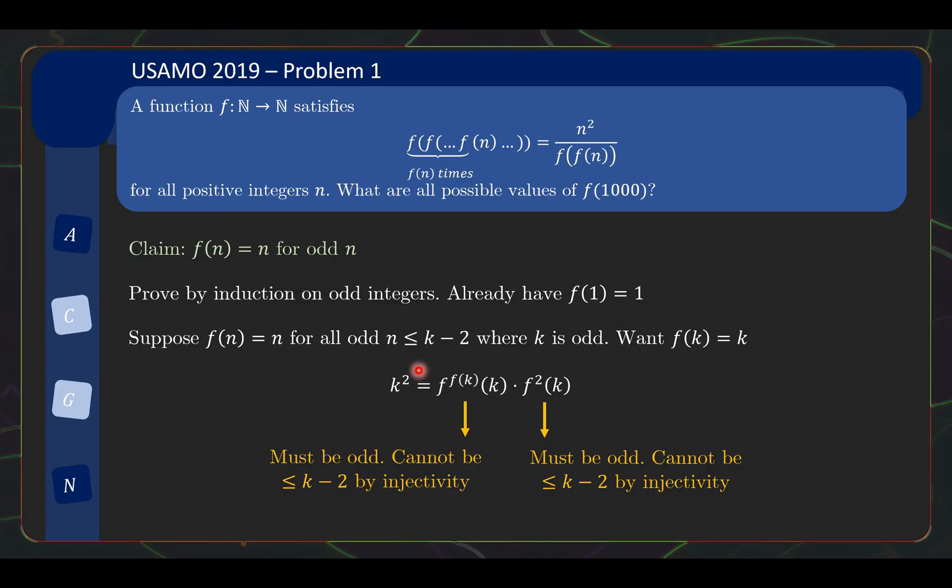k minus 2 can only be mapped in by k minus 2. So, if you start off at something that's not k minus 2, you can never end up at k minus 2. So, same thing for this factor here. So, two odd numbers that are at least k multiplied to k squared. This forces each of these factors to be equal to k. And this is the key observation. And once you reach this, in particular, f(f(k)) equals k, the rest of the proof follows a familiar logic.